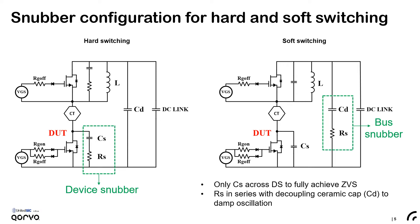We have two recommended configurations for RC snubber — one for hard switching and one for ZVS soft switching. The circuit diagram shows a simple half bridge. The DC link capacitor is the bulk capacitor that provides energy to the load. CD is a decoupling capacitor placed very close to the half bridge to reduce power loop size and parasitic inductance. CD provides the charge and discharge energy during switching transients. For hard switching VDS ringing and spike, an RC snubber right across the device drain to source is most effective to dampen the ringing — we call it a device snubber. For ZVS soft switching, we recommend a pure snubber capacitance CS across the device drain to source, and put the snubber resistor in series with the decoupling cap CD. This way the snubber resistor RS is not in the ZVS path and the CS energy can be fully recycled — we call this a bus snubber.